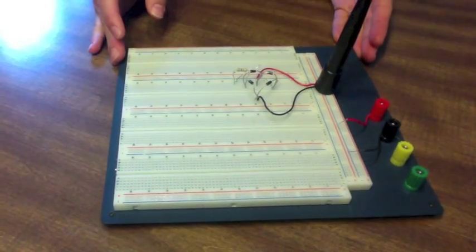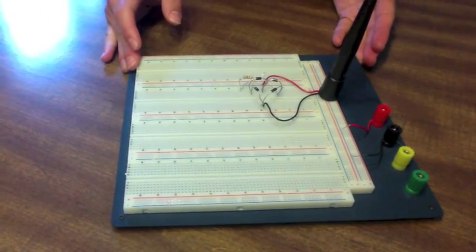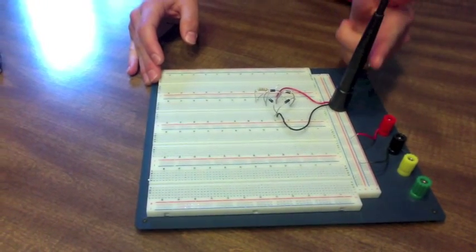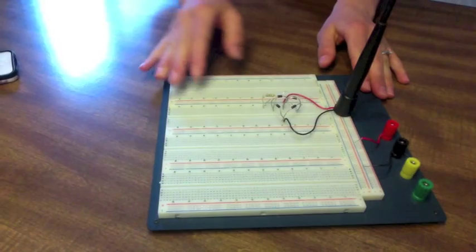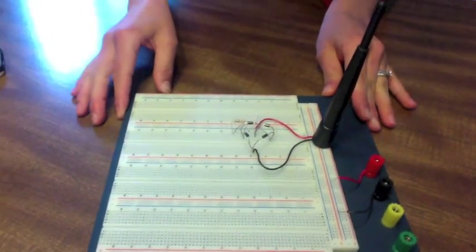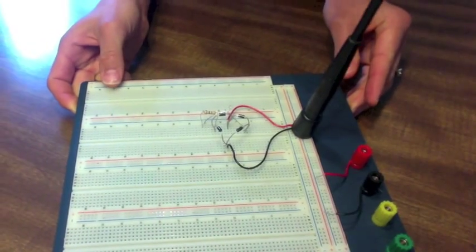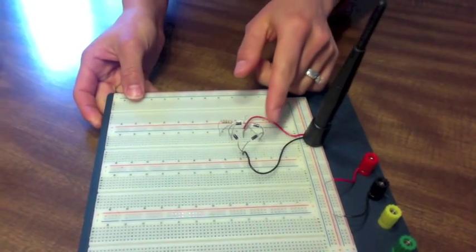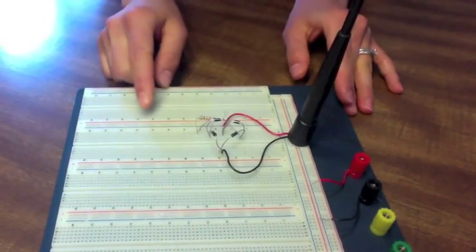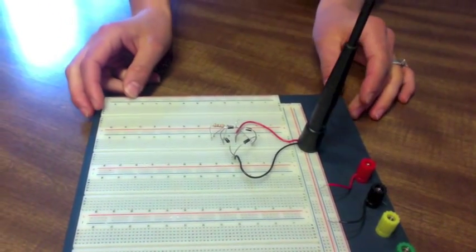Here you have our current rectenna. It consists of an antenna here and a rectifying circuit. In this rectifying circuit you can see we have four diodes of equal value, a resistor, and an LED. What these will do...